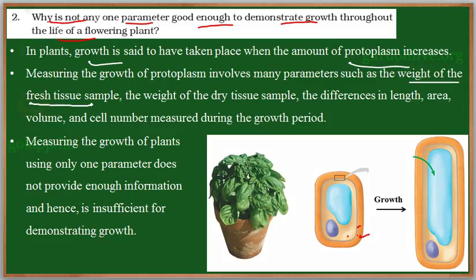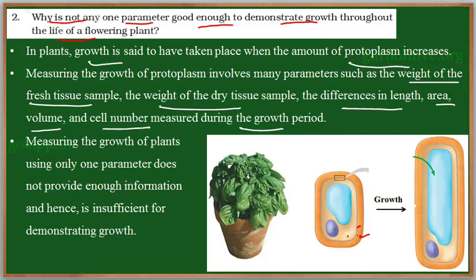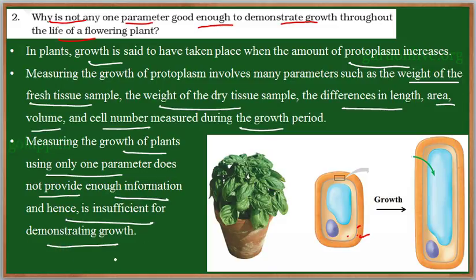The parameters used to measure growth include: weight of the fresh tissue sample, weight of the dry tissue sample, difference in length, area, volume, and cell number — all of which are measured during the growth period. These are the parameters, and hence it is insufficient to use just one. With one parameter alone, we cannot conclude that growth has taken place or not.